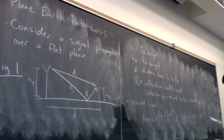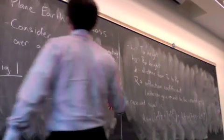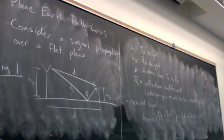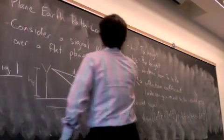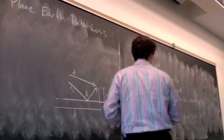r a sine 2 pi ft plus 2 pi fd2 over c. So it turns out, as I mentioned, if the ground can be modeled as a perfect conductor, by the way, this is equation 2 in your notes.